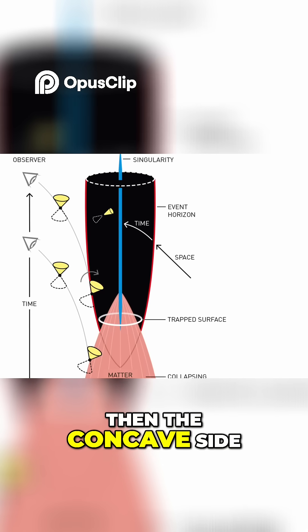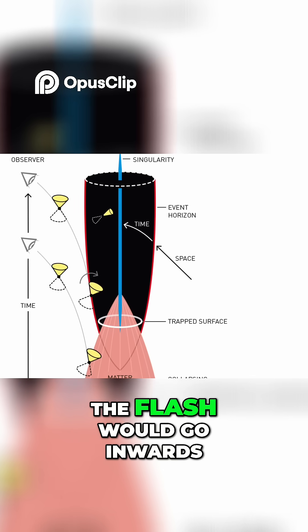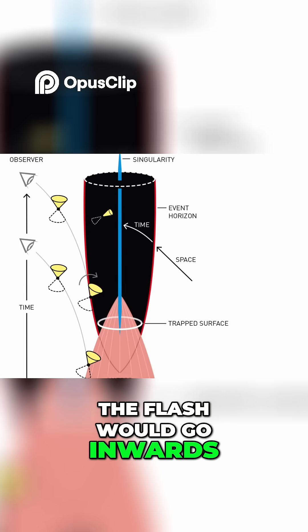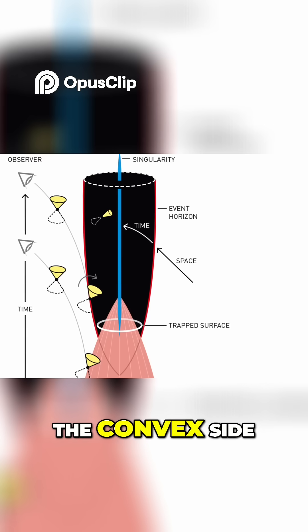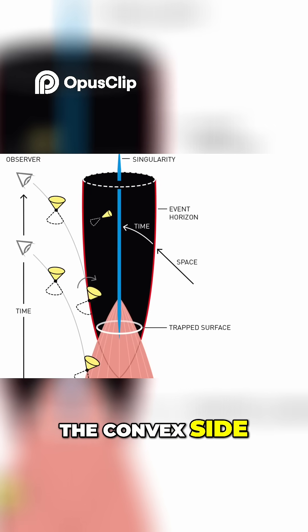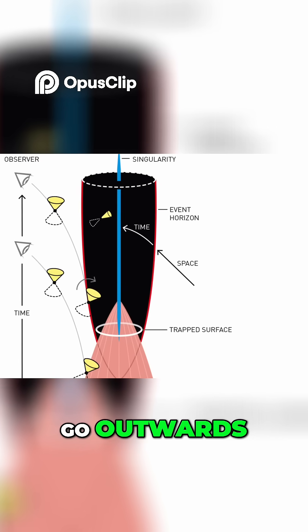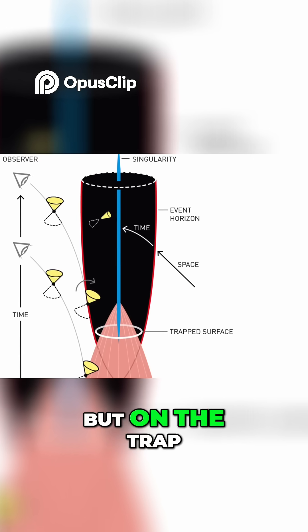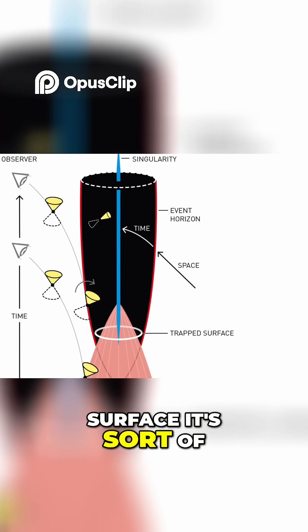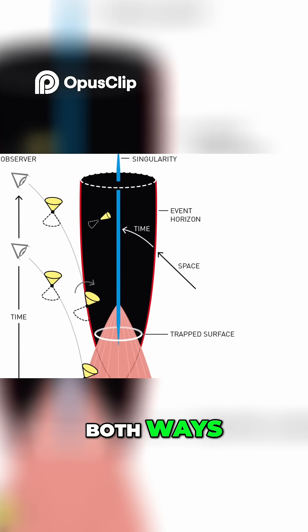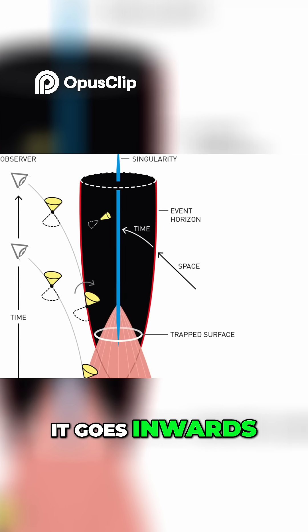then the concave side, the flash would go inwards, the convex side would go outwards. But on the trapped surface, it's sort of both ways — it goes inwards.